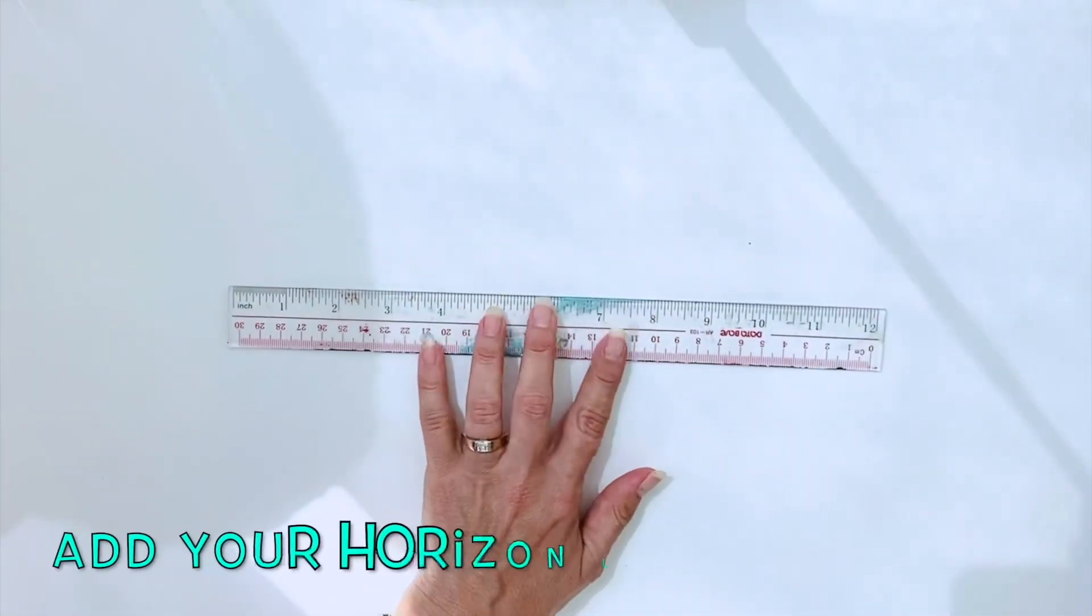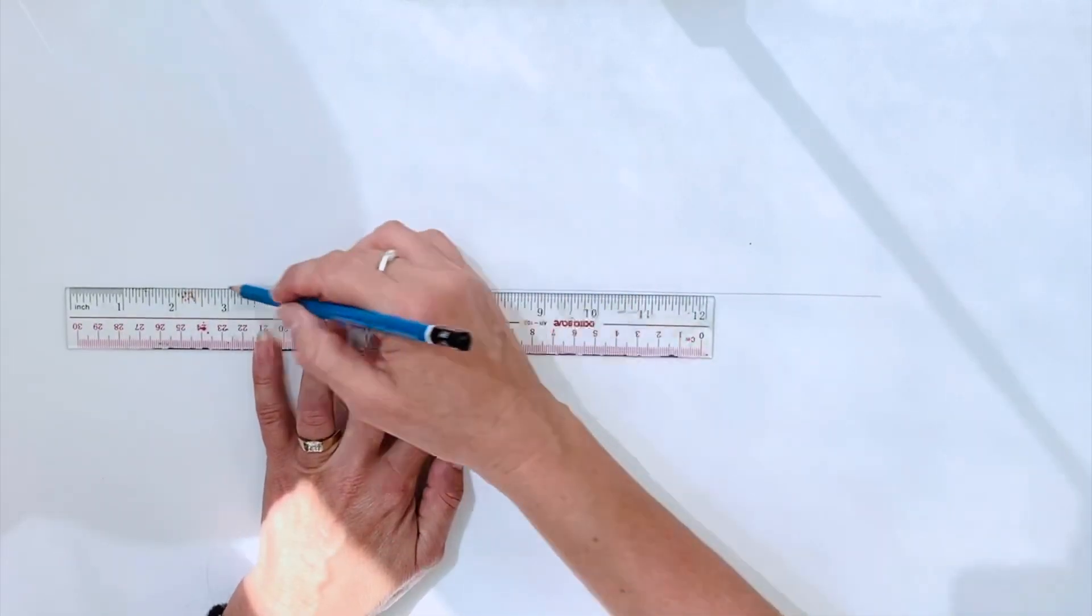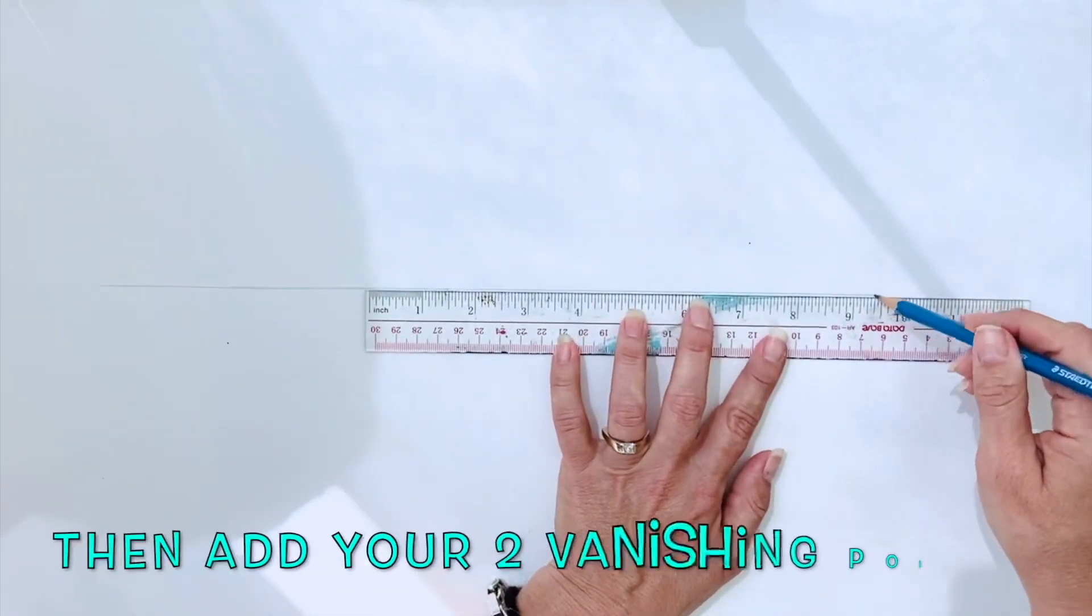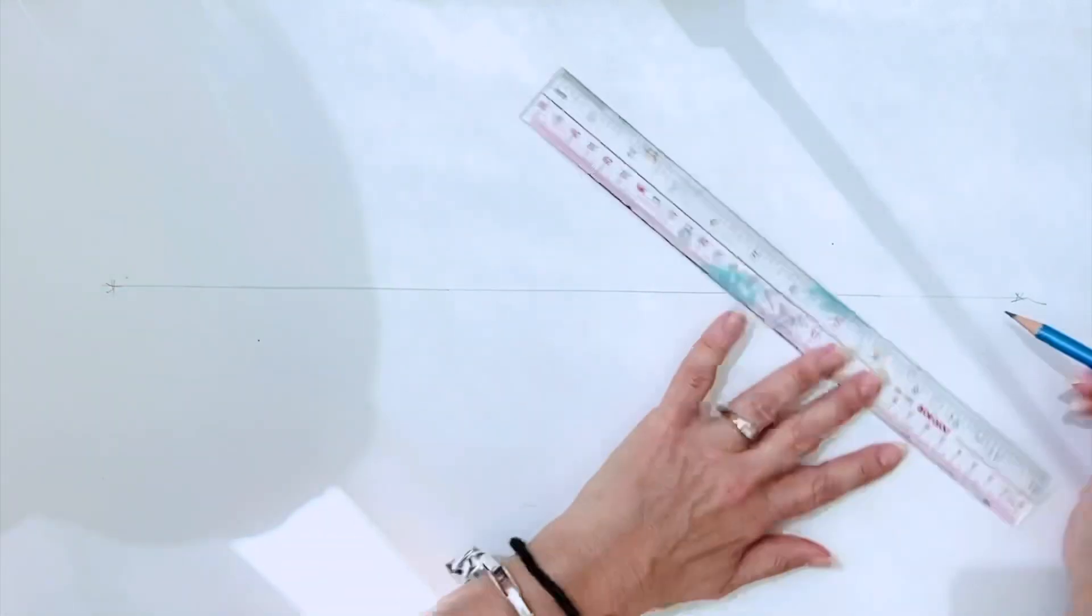Two-point perspective is a tool we use to help us draw accurate perspective. We start by adding the horizon line. The horizon line is an imaginary line where the sky meets the earth.